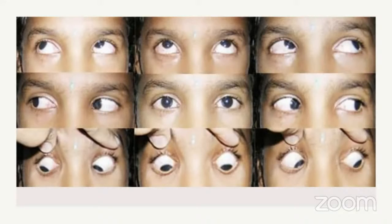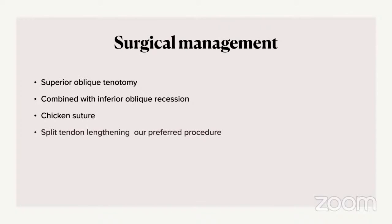For medical management: some patients improve with observation alone. Congenital Brown syndrome rarely persists into adulthood; most presentations are acquired and resolve over time. Some patients improve with prisms without surgery. We propose FDGT as a treatment for acquired Brown syndrome. Intratrochlear steroids are an option for acquired Brown syndrome. Surgical options include superior oblique tenotomy — which can cause superior oblique palsy — combined with inferior oblique recession. The silicone chicken suture spacer is one proposed mechanism, and split tendon lengthening is our preferred procedure, causing less weakening of the superior oblique with fewer patients developing superior oblique palsy.